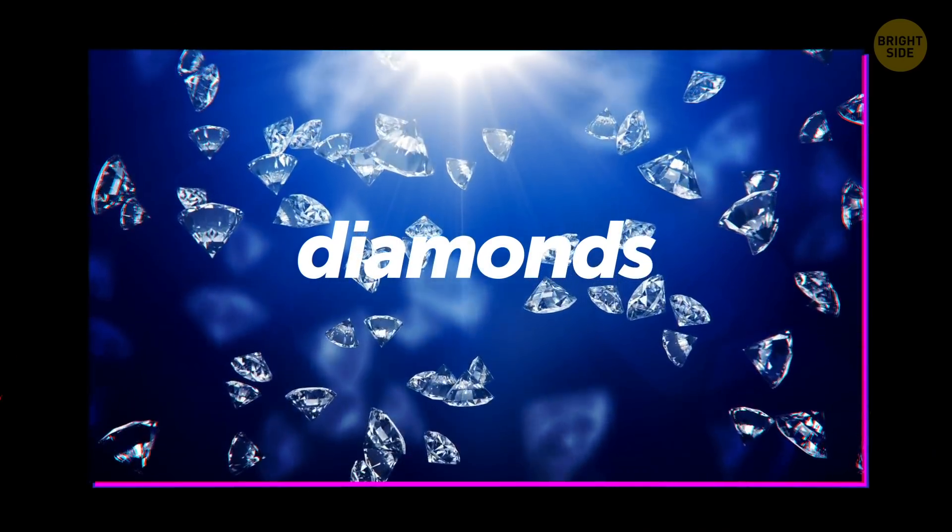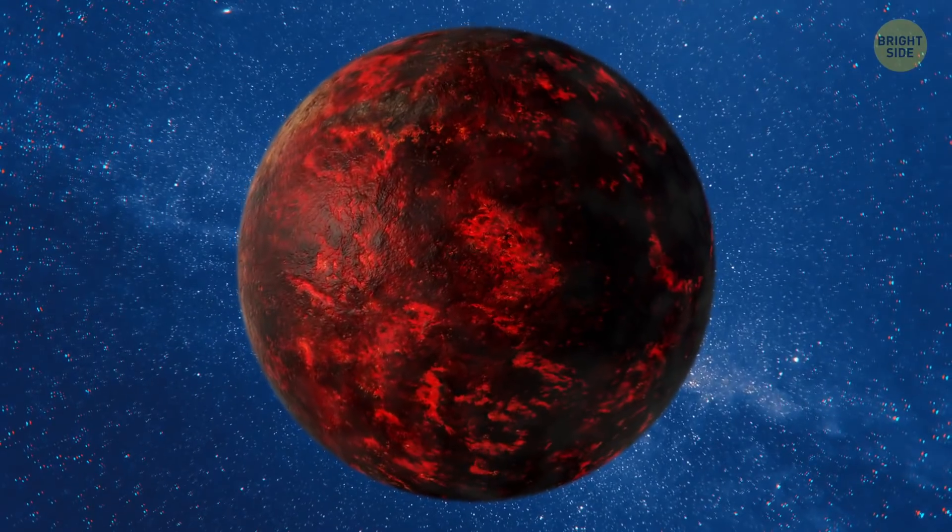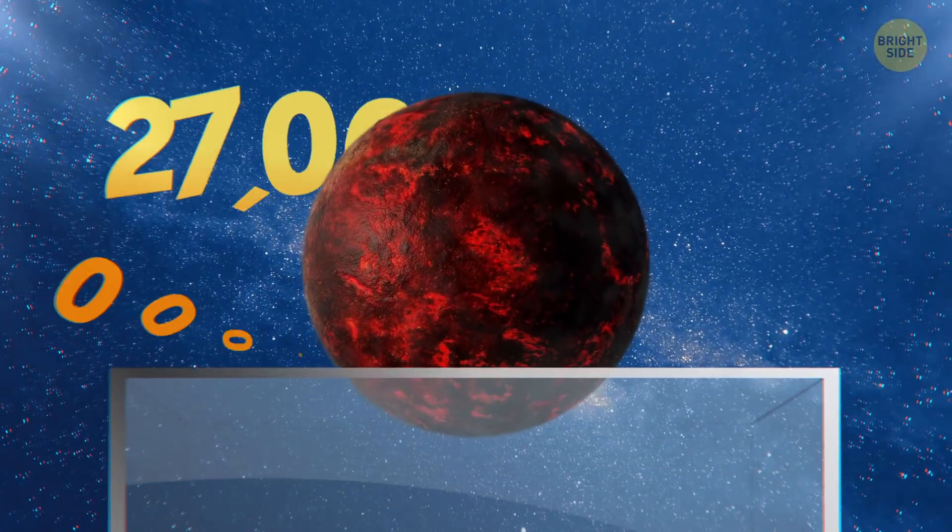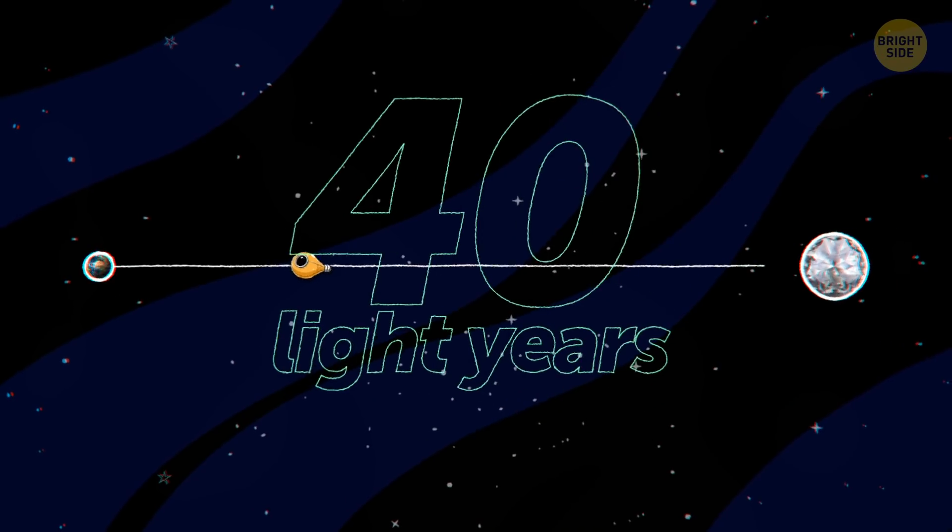If you like diamonds, exoplanet Janssen is one-third of the stuff. This diamond planet would cost around 27 nonillion dollars. Though, having traveled 40 light-years from Earth, you could surely ask for a discount. Get a few of those 30 zeros taken off.